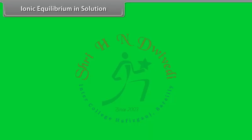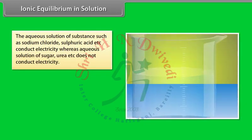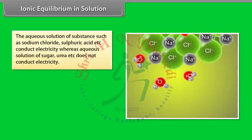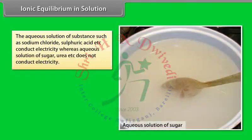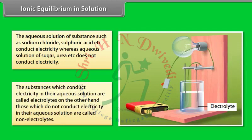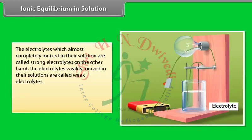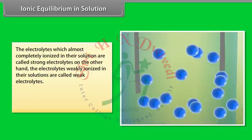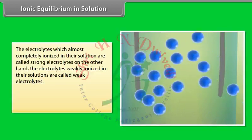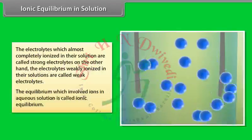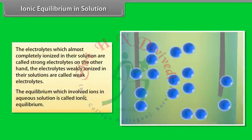The aqueous solution of substances such as sodium chloride and sulfuric acid conduct electricity, whereas aqueous solutions of sugar and urea do not. Substances which conduct electricity in their aqueous solution are called electrolytes; those which do not are called non-electrolytes. Electrolytes that are almost completely ionized are called strong electrolytes; those weakly ionized are called weak electrolytes. The equilibrium involving ions in aqueous solution is called ionic equilibrium.